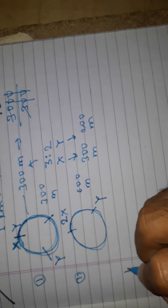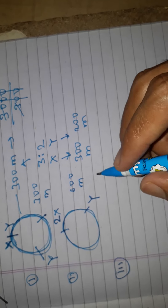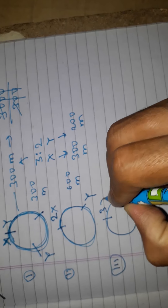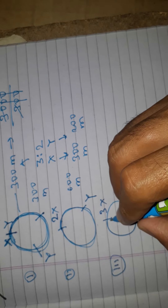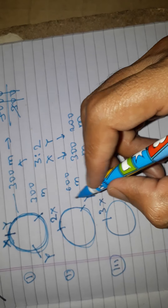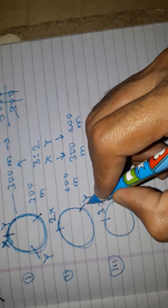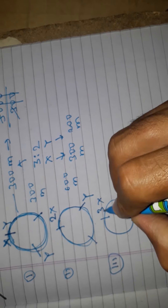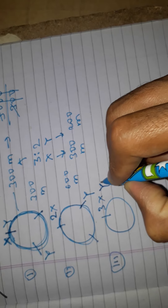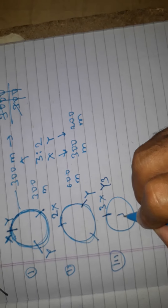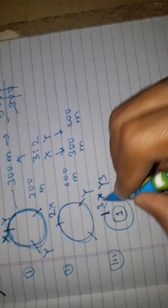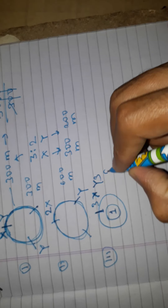In the third round, we draw another circle. X completes three rounds at 900 meters total. Y also comes to the same position — this is the first time X and Y meet each other. After this point, 900 meters of the race are complete.